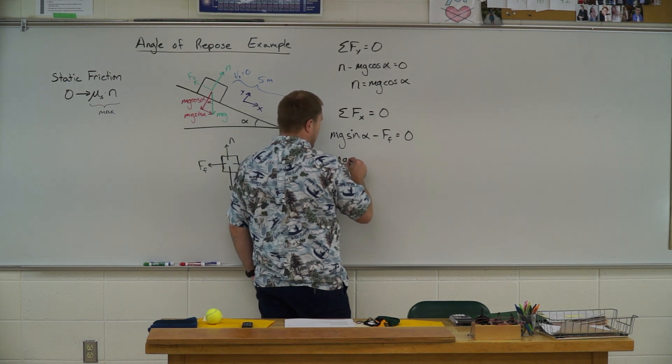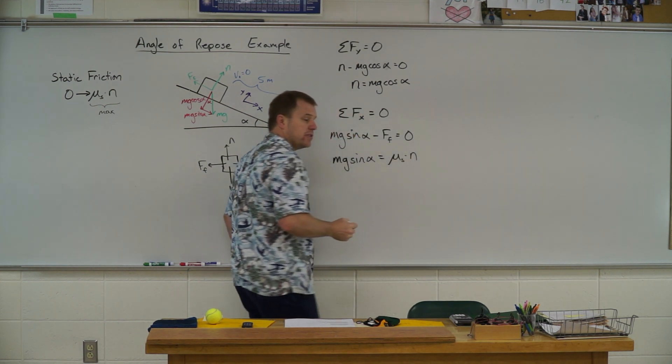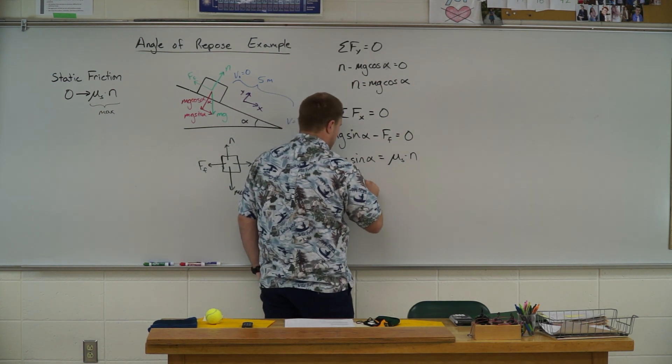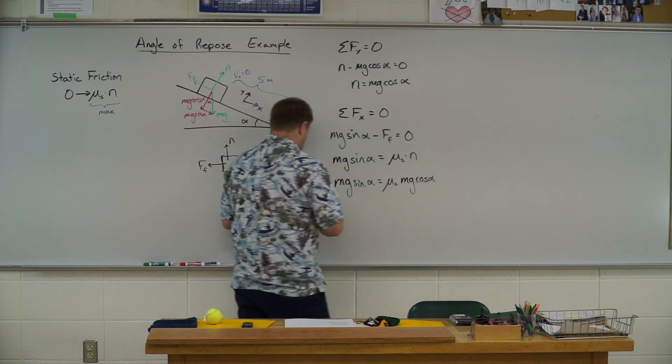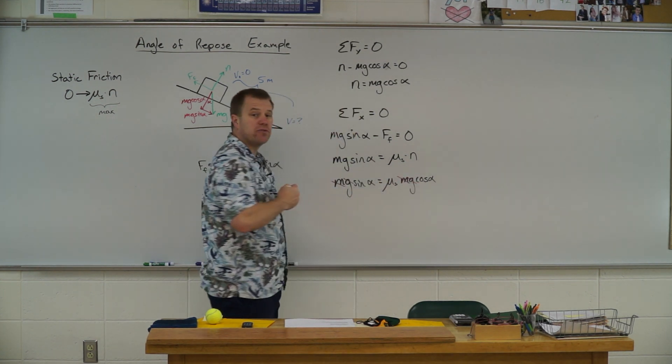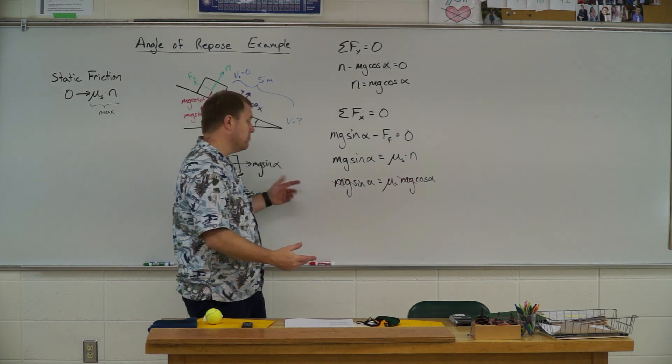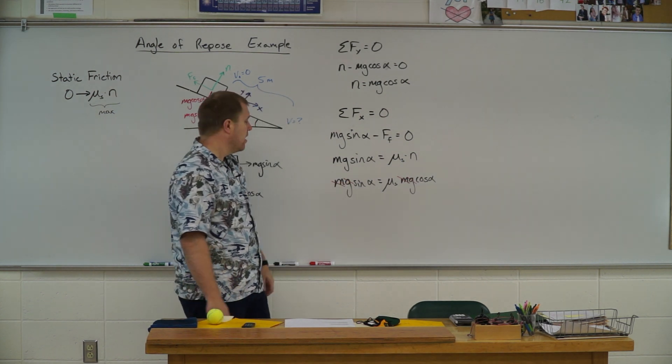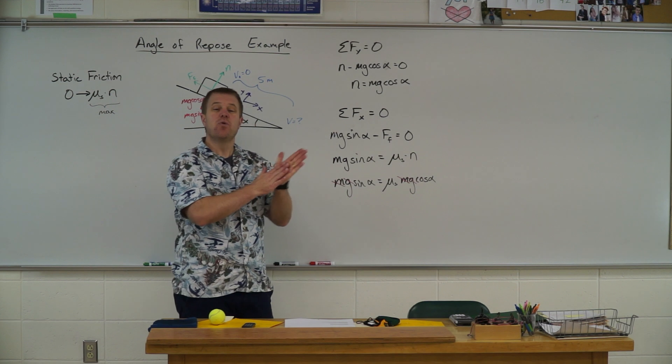So we're going to substitute in some stuff here. So we have mg sine alpha equals mu sub s times normal force. Normal force I have to solve for in the y direction. So now I have mg sine alpha equals mu sub s times mg cosine of alpha. So I have an mg on both sides. So the m's cancel and the g's cancel. So the angle of repose for this ramp is going to be the same if I go to the moon because it doesn't matter what object I put on that ramp and it doesn't matter what the acceleration of gravity is on it. All that matters is what is that coefficient of friction between those two objects.